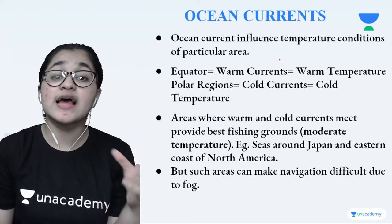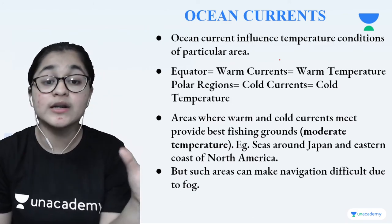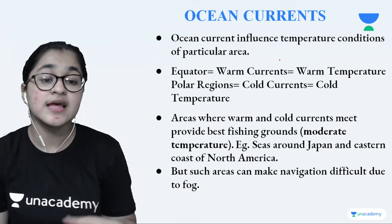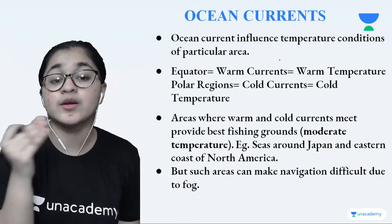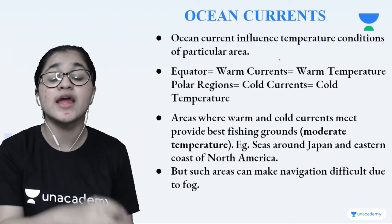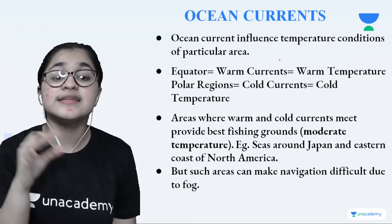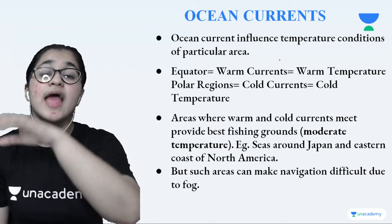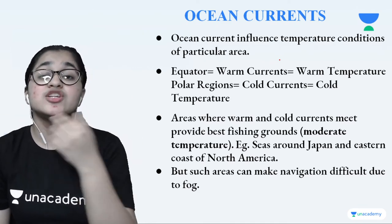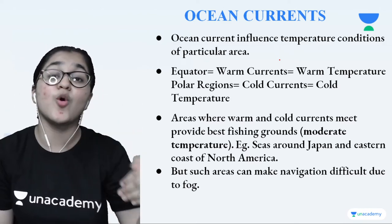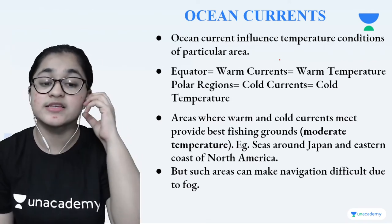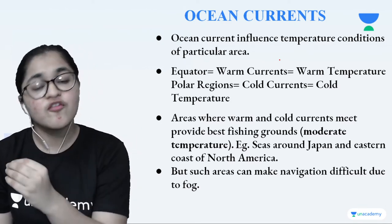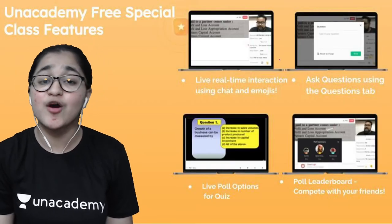There are places where warm and cold currents meet — for example, where the Western Australian Current (cold) meets the South Equatorial Current, or where the Greenland Current (cold) meets the Norwegian Current (warm). Where warm and cold currents meet, the temperature is very moderate — not too hot, not too cold — which is ideal for fish. So these areas are the best fishing grounds. However, these same regions become very foggy, making navigation very difficult for sailors who cannot see the path ahead clearly.